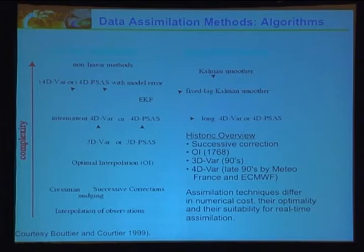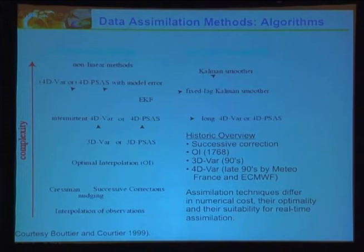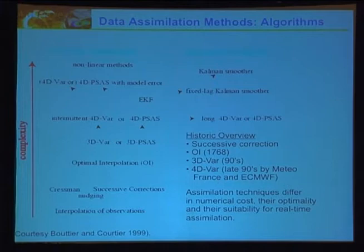All assimilation techniques differ in computational cost, ease of implementation, and suitability for real-time assimilation. The variational methods have the advantage that 4DVar can give you a smooth time-distributed solution to the observations — it gives a nice solution without discontinuities in the time variation sense and approximates observations quite well. The disadvantage is you have to develop derivatives of your code — tangent and adjoint — which is very time-consuming and hard.